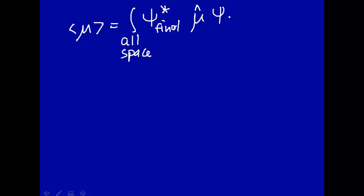Let's write down what the transition dipole moment was. That was calculated as this quantity, the integral over all space of the complex conjugate of the final state, times the dipole moment operator, times the wave function of the initial state, d tau.